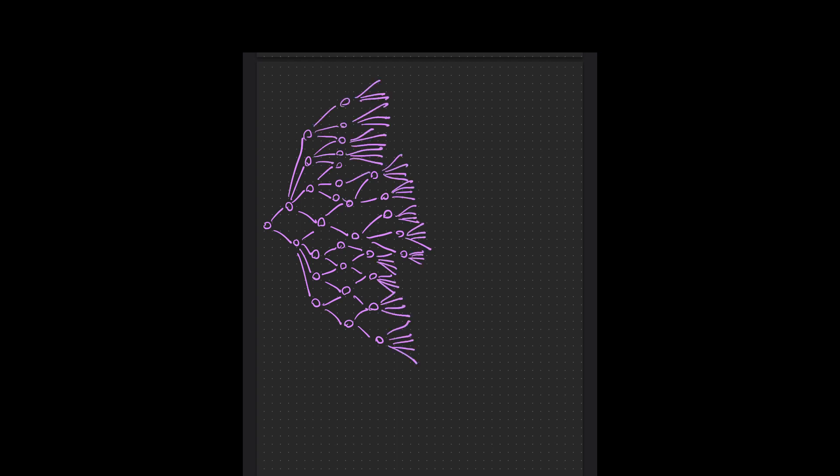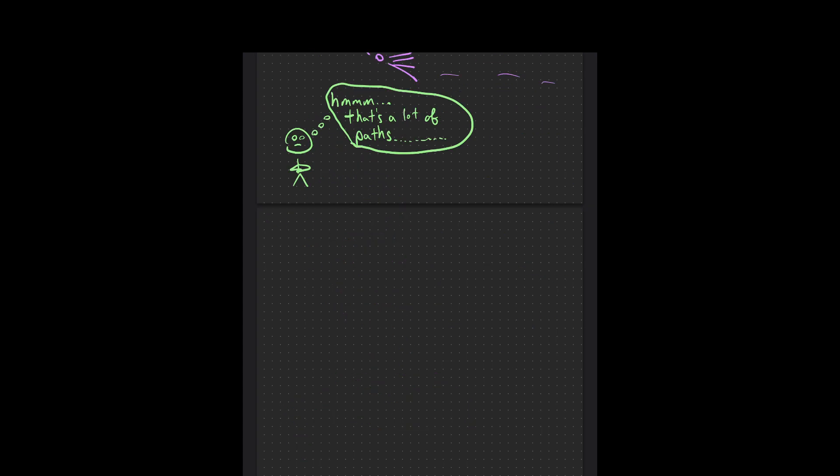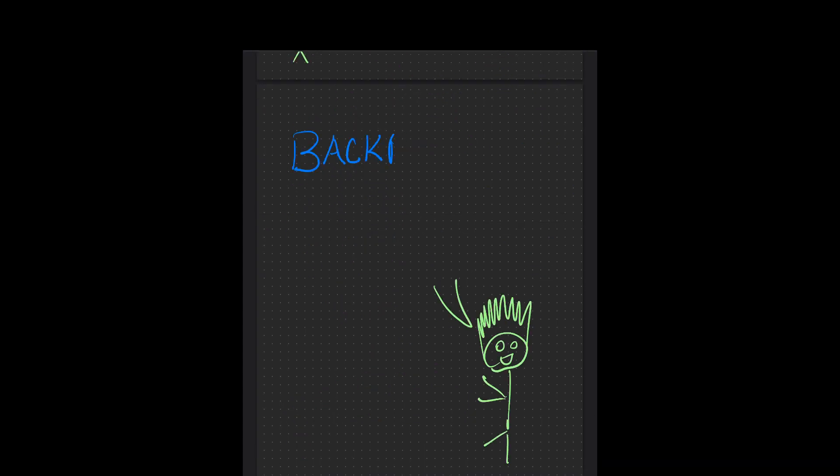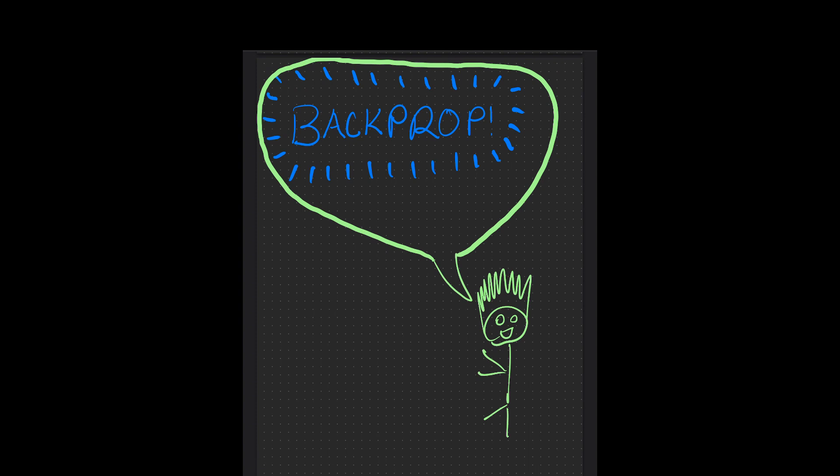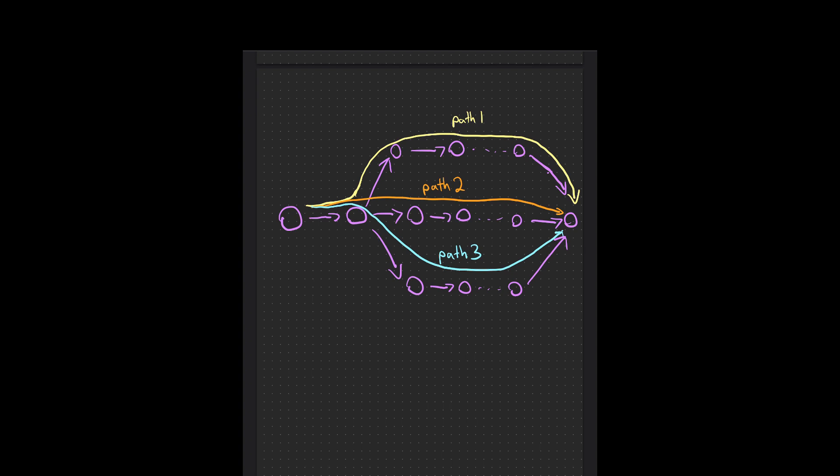But wait, isn't that really super duper terribly expensive? Because what if the graph is super duper big, and then you're just computing this thing for an exponential number of paths? Enter backprop. It takes advantage of the fact that, well, a lot of these paths actually share a lot of computation.